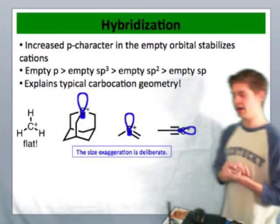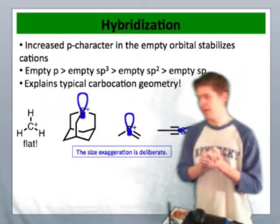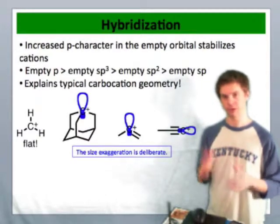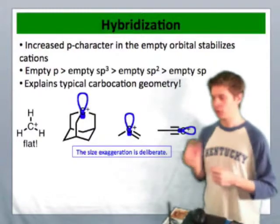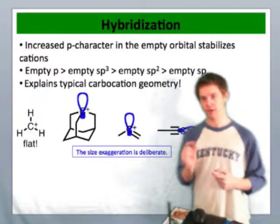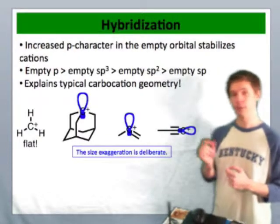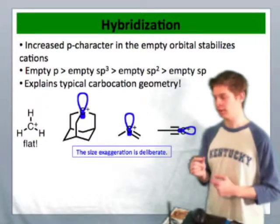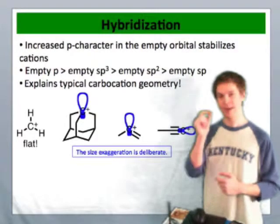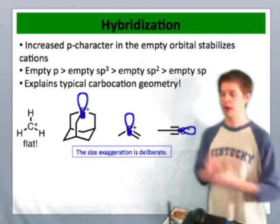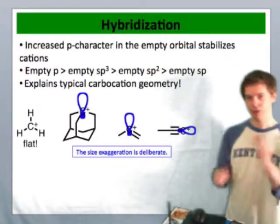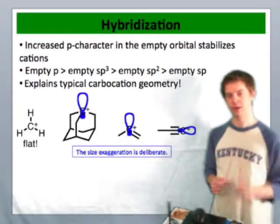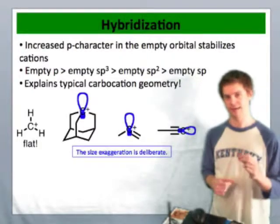This is why we observe — and this is something that can be borne out through experiment — that normal alkyl cations without geometric constraints are flat. They're perfectly flat because they want their empty orbital to possess as much p character as possible. They can achieve this by making that empty orbital into essentially a p-type orbital with no s character whatsoever. Introducing hybridization into the equation complicates things a little bit, and we'll take a look at that in more detail in the next video.